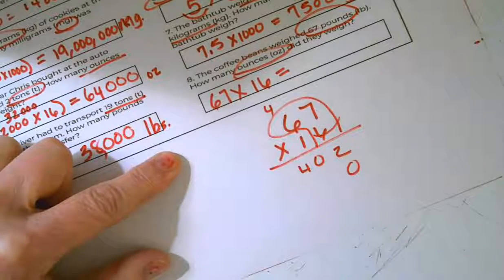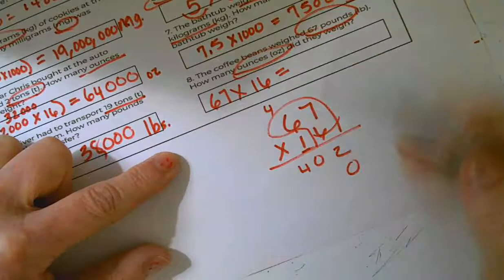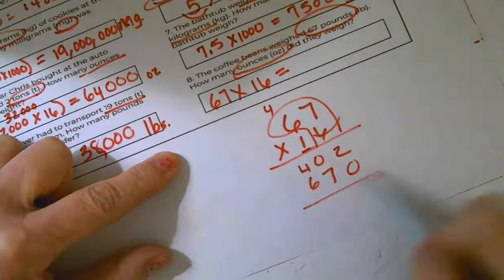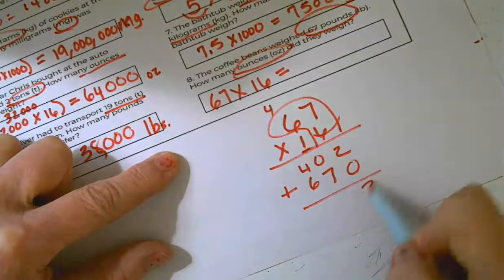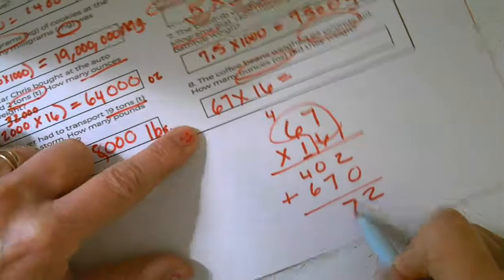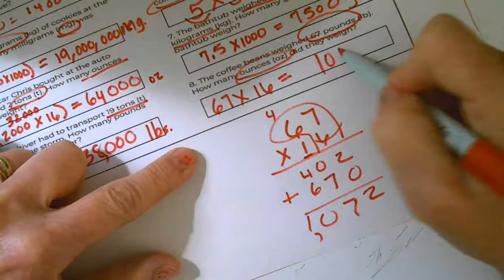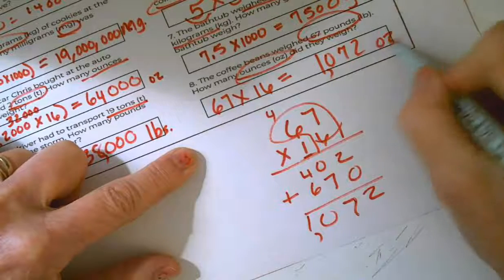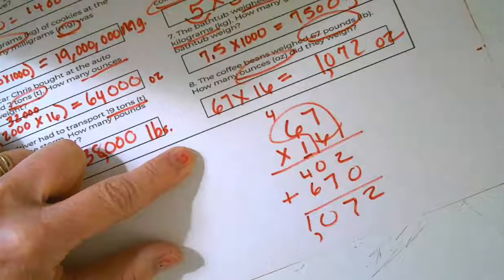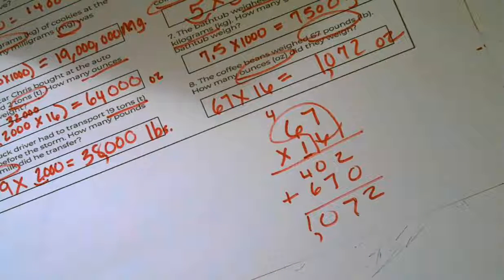All right, I'm going to come down and put 0. And I'm going to multiply for my tens place. 1 times 7 is 7. 1 times 6 is 6. I'm going to add my two partial products. And I get 1,072. So there are 1,072 ounces in 67 pounds of coffee. I hope this helped you guys. And good luck on today's assignment. Bye.